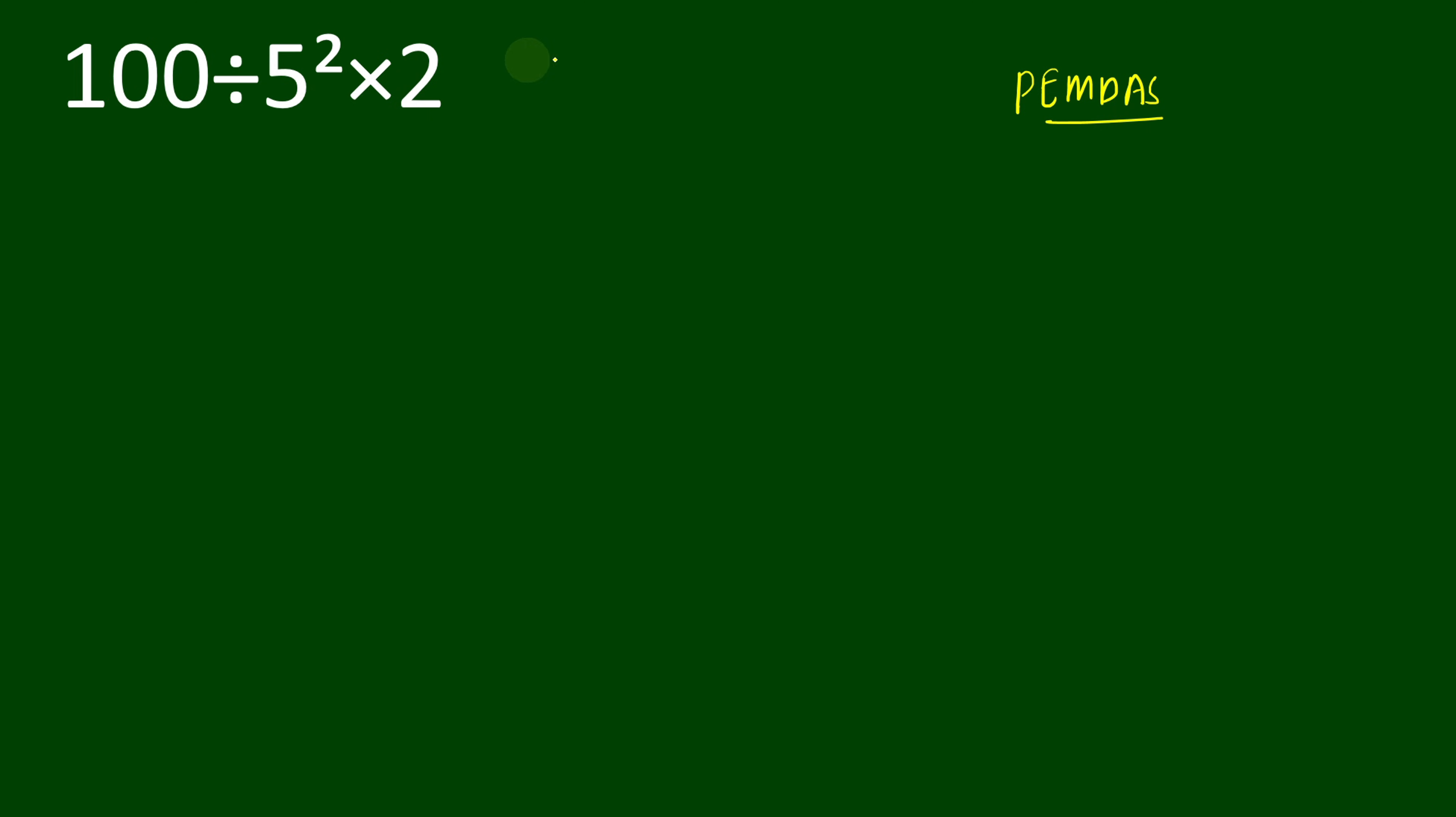According to PEMDAS, there are no parentheses, so we will go for the exponent part first. Here the exponent part is 5 squared, and 5 squared is nothing but 5 times 5, which can be written as 25. So in place of 5 squared we will write 25. We will rewrite our question as 100 divided by 25 times 2.